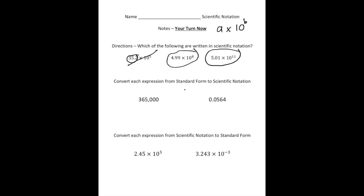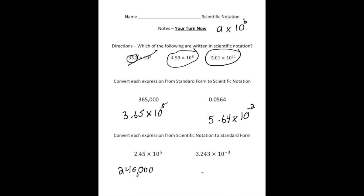The next part asked you to convert expressions into scientific notation: 365,000 should be 3.65 times 10 to the fifth power, and 0.0564 should be 5.64 times 10 to the negative second power. Then converting from scientific notation to standard form: 2.45 times 10 to the fifth equals 245,000, and the last one divided by 10 three times gives 0.003243.